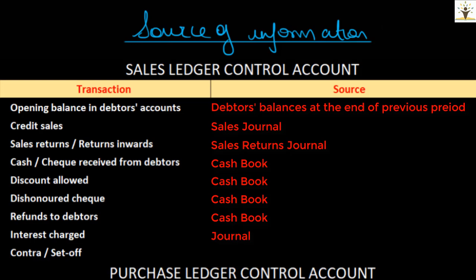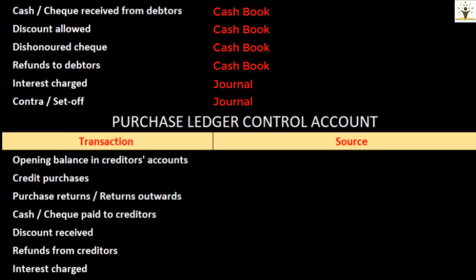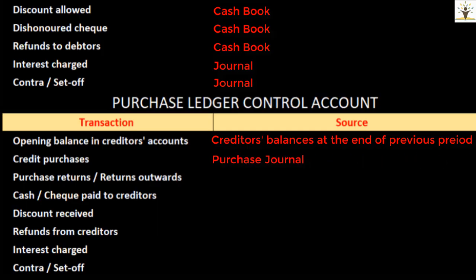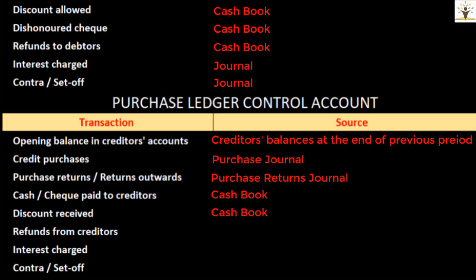In the same way, for the purchase ledger control account: the opening balance can be taken from the total of creditors balances at the end of the previous period. Credit purchases for the period can be taken from the total of the purchase journal. Purchase returns or return outwards can be taken from the total of the purchase returns journal. Cash and cheques paid to creditors, discount received, and refunds received from creditors can be taken from the cash book. Interest charged by creditors and set-off or contra transactions can be taken from the journal book.